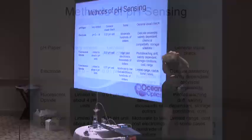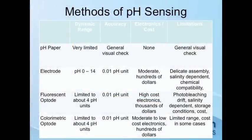Here's a quick table highlighting some major aspects of these methods. Dynamic range — the electrode covers more than the fluorescent or colorimetric optodes, which are limited to around 4 pH units. Competitors like Presens and PyroScience are doing the same thing, using a fluorescent dye — pyranine — in a similar range. Accuracy depends on how good your electronics are. Cost — electrodes are pretty cheap. Fluorescent optodes are expensive because you need phase fluorometers and expensive electronics.